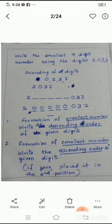Yes, first we should arrange the digits in ascending order. The ascending order of the digits are 0, 2, 3, 7. From that we can form the smallest number 2037, that is two thousand thirty-seven, and that is a four-digit number.